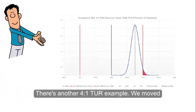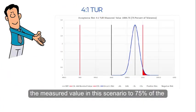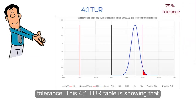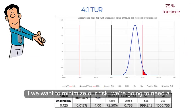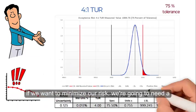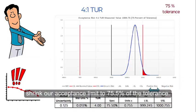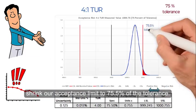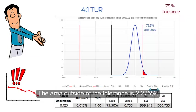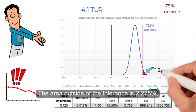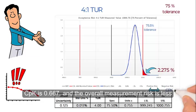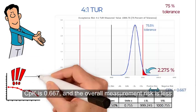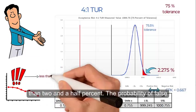In another four-to-one TUR example, we move the measured value to 75 percent of the tolerance. This four-to-one TUR table shows that if we want to minimize our risk, we need to shrink our acceptance limit to 75.5 percent of the tolerance. The area outside of the tolerance is 2.275 percent, CPK is 0.667, and the overall measurement risk is less than two and a half percent.